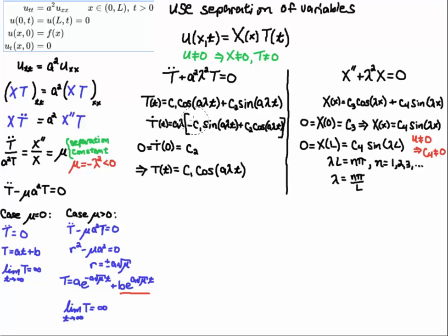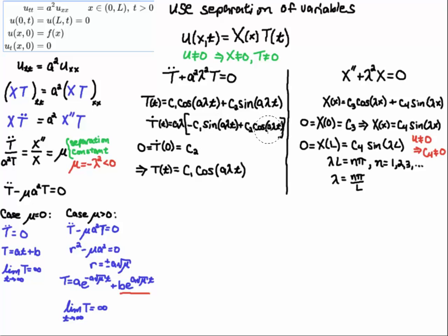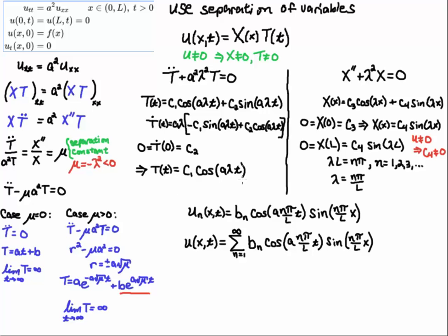Now I impose the derivative initial condition. Taking the derivative: a lambda pops out, giving a minus sine of a lambda t term. Plugging in t = 0, I get c2 times one and c1 times zero, leaving c2 = 0. That gives T(t) = c1 cosine(aλt).